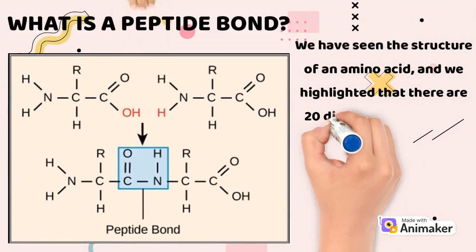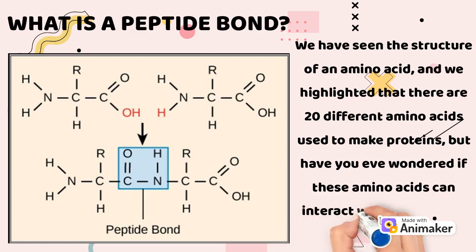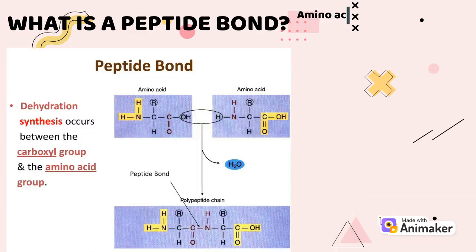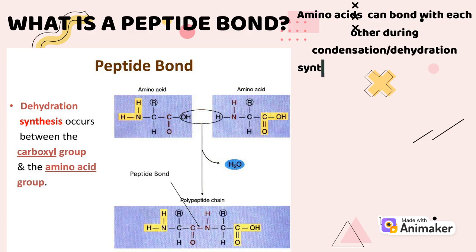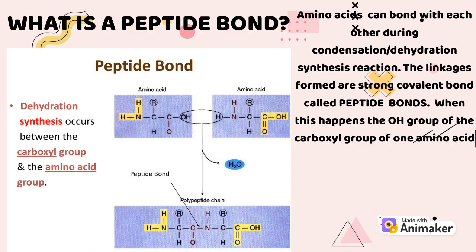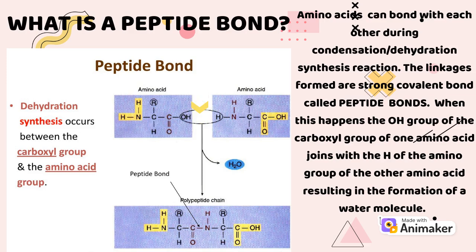We highlighted that there are 20 different amino acids used to make proteins, but have you ever wondered if these amino acids can interact with each other? Amino acids can bond with each other during condensation, also known as dehydration synthesis reactions, which simply means the loss of water. The linkages formed are strong covalent bonds called peptide bonds. When this happens, the OH group of the carboxyl group of one amino acid joins with the H atom of the amino group of another amino acid, thereby forming a water molecule.